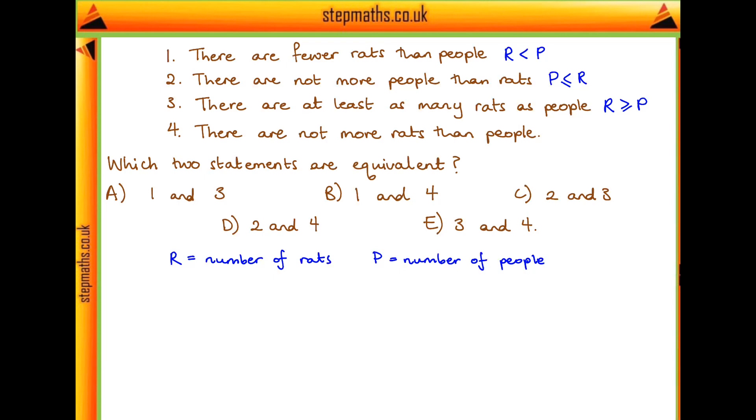And finally statement four, there are not more rats than people. So the number of rats can be less than the number of people or equal to the number of people.